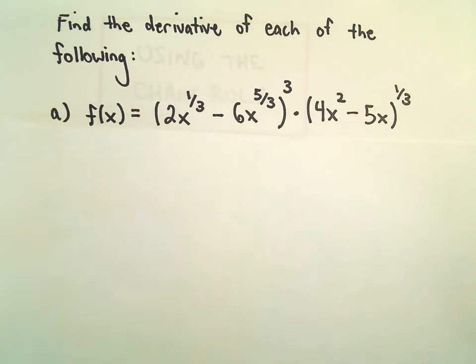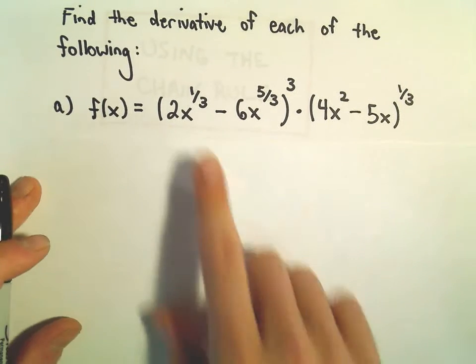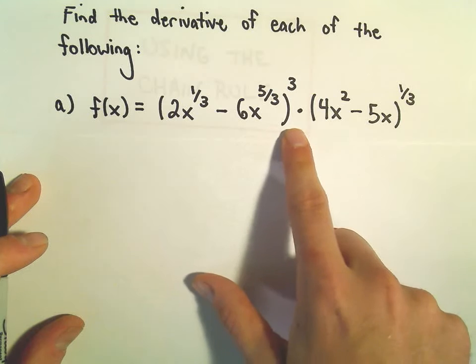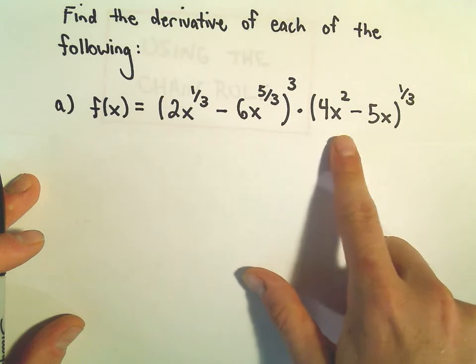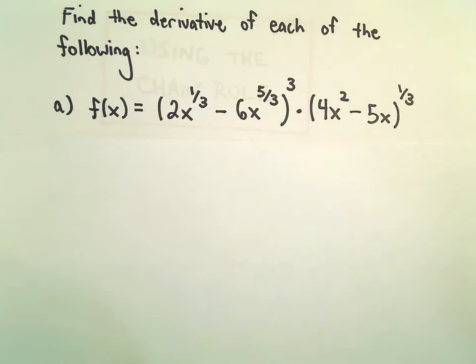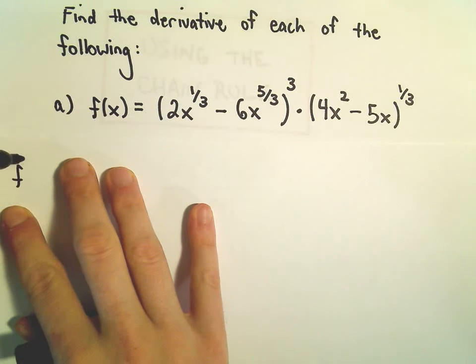The first thing I think when I see this is I see stuff with the variables in parentheses times stuff with the variables in parentheses, so that tells me we're going to have to use the product rule.